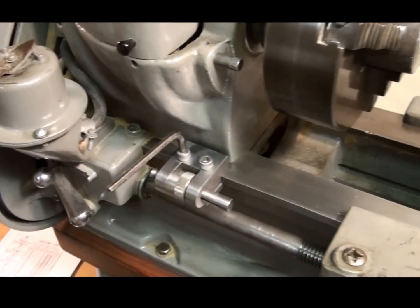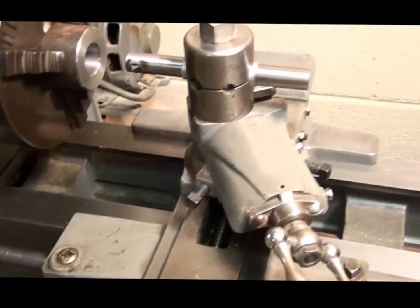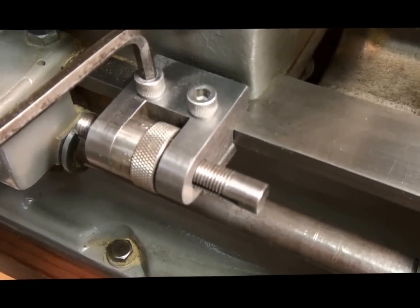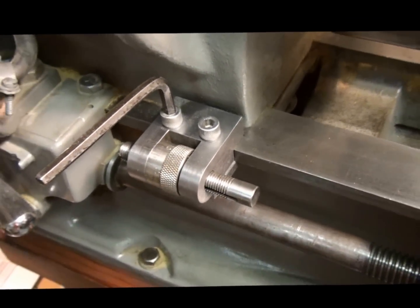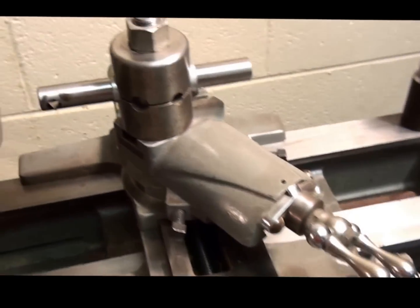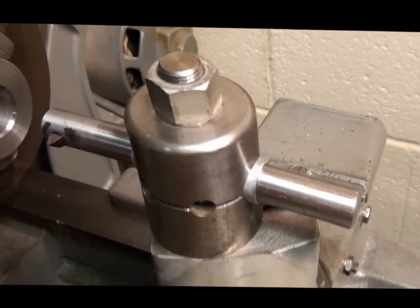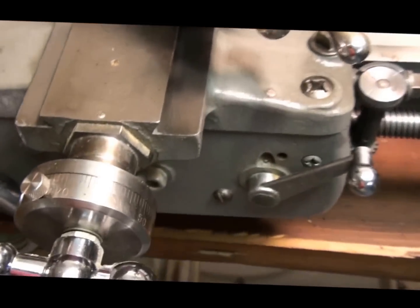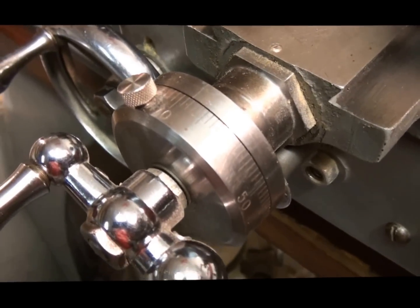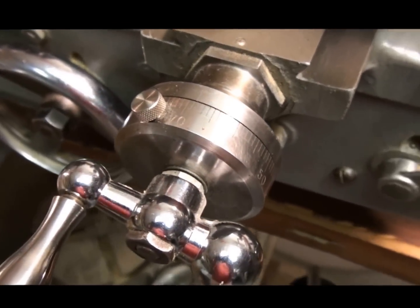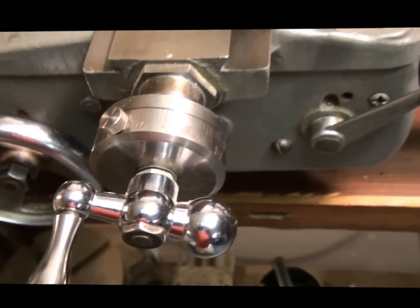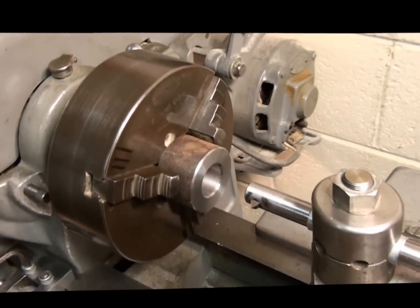I did make a few accessories for it. I made him this carriage stop. I have drawings for this on the internet. If anyone's interested, I'll point them in that direction. I made a boring bar holder, and I made a new dial for him, so it makes it easier to read the cross slide dial. Other than that, it's pretty much a standard Atlas lathe.